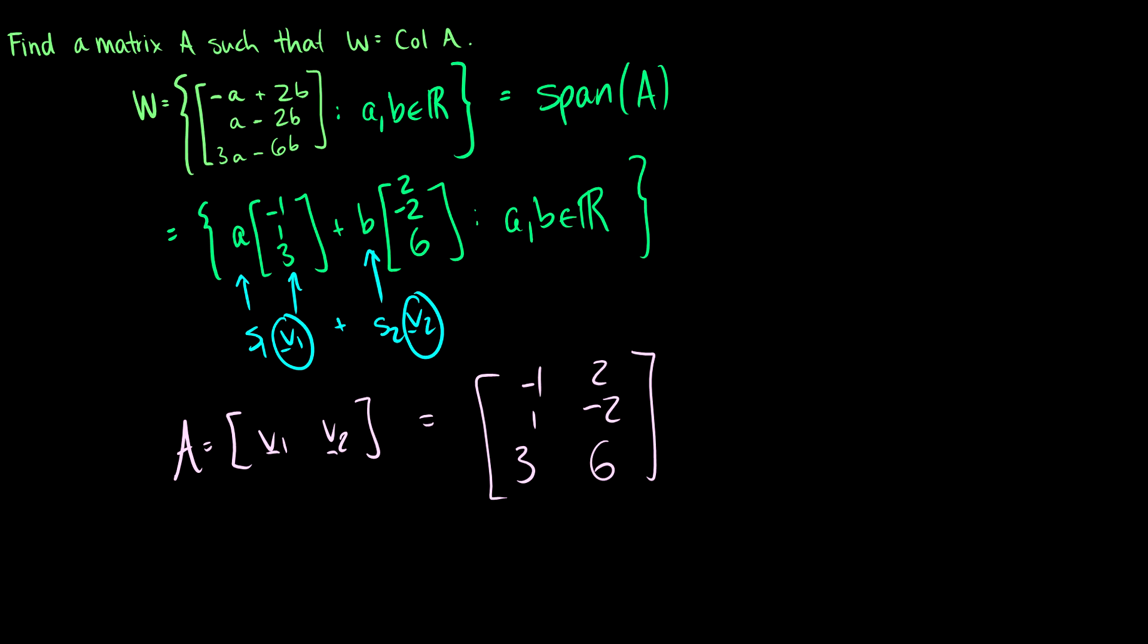So if we take the span of this, we're just asking for all linear combinations of the first column and the second column, which is exactly what we get in this second equality here, which is of course equivalent to the first equality. So this is our A.